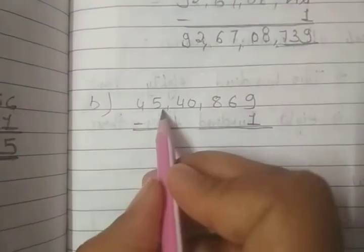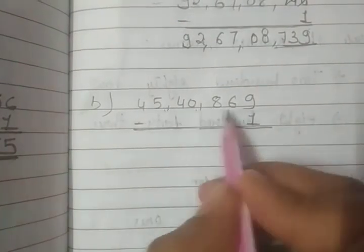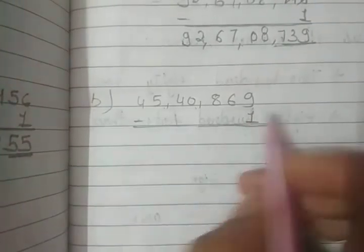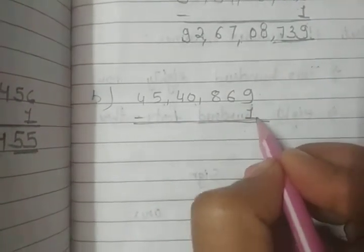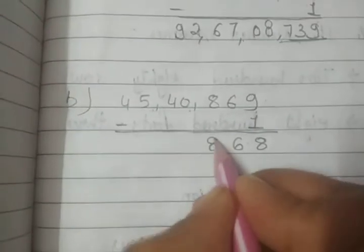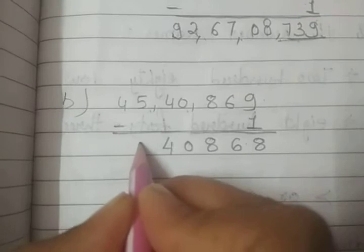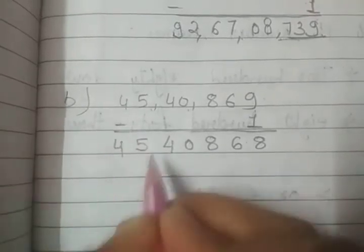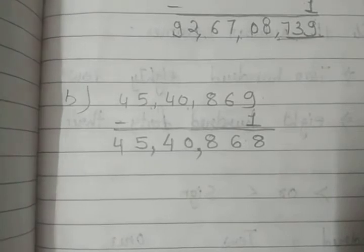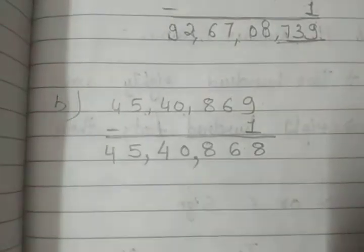Next, B is 45,40,869. We subtract 1 from this number. 9 minus 1 is 8, then 6, 8, 0, 4, 5, 4. So 45,40,868 is our answer.